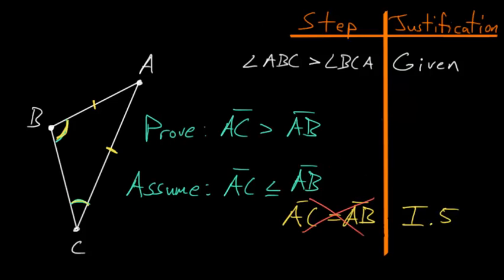So we can cross that out and now we can just focus on the second case where AC is less than AB. But with this, we know due to Book 1 Proposition number 18 that if AC is less than AB, so this side here is smaller than this side here, then that would mean that this angle here is bigger than this angle here, since we just proved that in the last video.